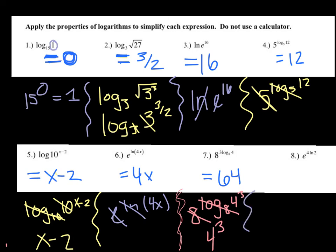Lastly, e to the power of 4 times ln of 2. That 4 becomes the exponent, so this becomes ln of 2 to the fourth. The base of e and the natural log in the exponent cancel, and we're left with 2 to the fourth power, which is 16.